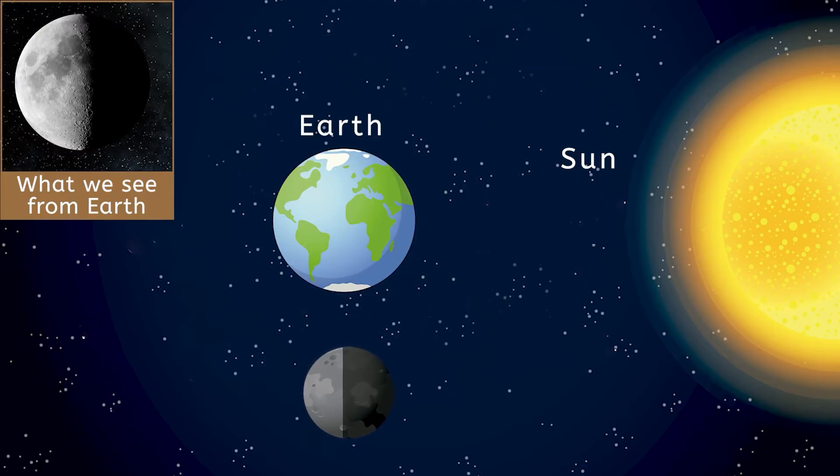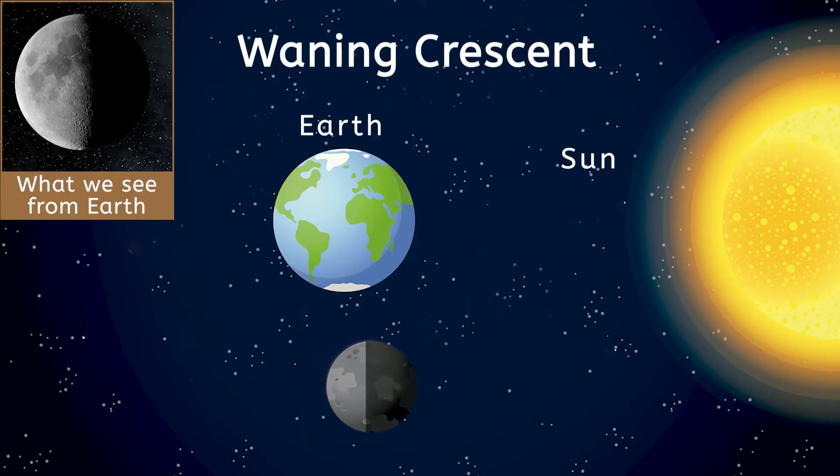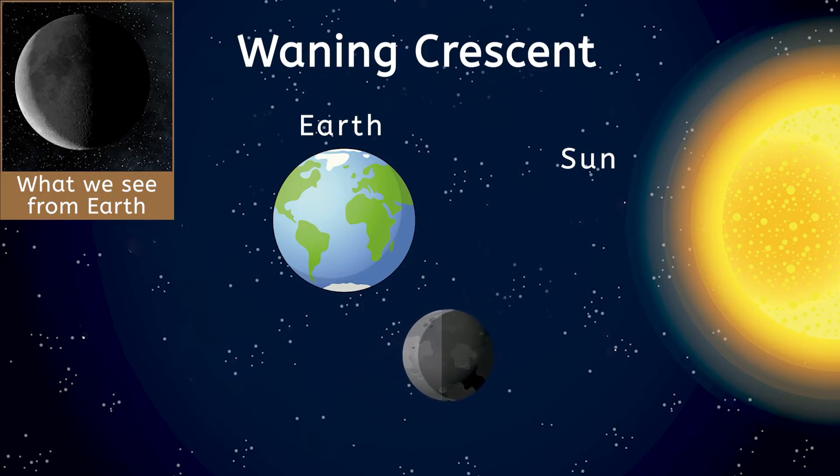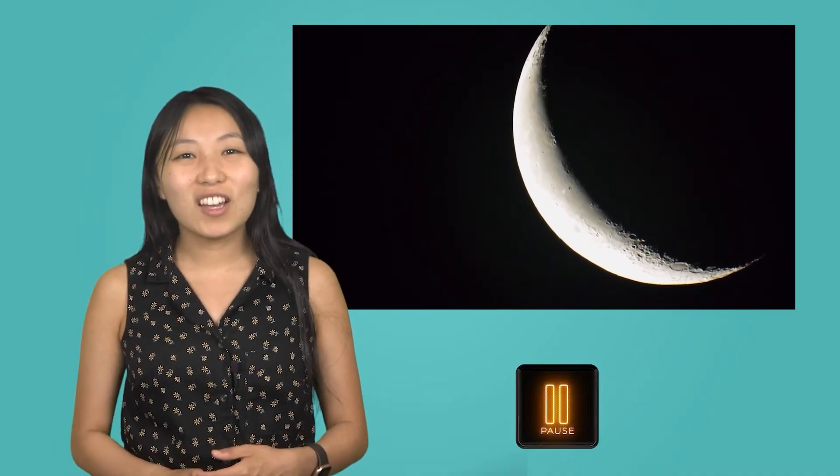Finally, the moon finishes this cycle with the waning crescent phase. Only a small sliver of the moon on the left side is illuminated, forming a thin crescent shape. Now that the moon is showing less of its lit side and is almost at the end of its journey, what do you think will happen next? Will we start seeing more or less of the moon being illuminated as it continues its orbit? Based on the patterns we've seen, try to predict what comes after the waning crescent phase. Pause the video and record your thoughts in your guided notes.